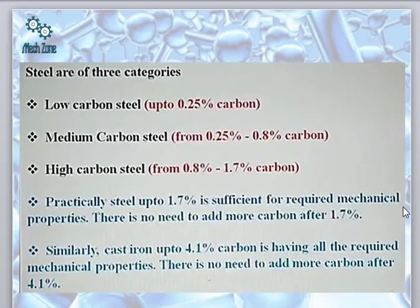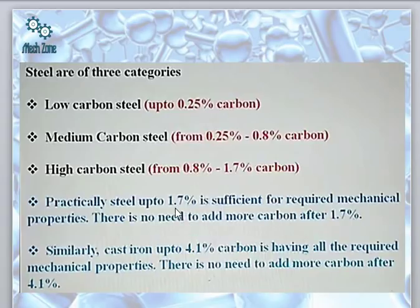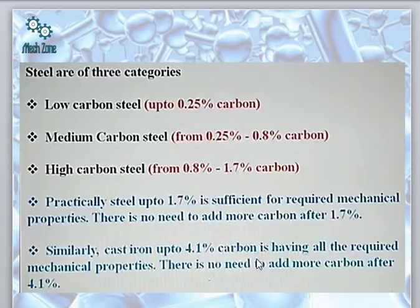Based on the percentage of carbon, steels can also be classified as low carbon steel, medium carbon steel, and high carbon steel. Low carbon steel has carbon up to 0.25 percent; medium carbon steel has carbon from 0.25 to 0.8 percent; and high carbon steel has carbon above 0.8 percent up to 1.7 percent. Practically, steel up to 1.7 percent carbon has sufficient mechanical properties, and there is no need to add carbon beyond 1.7 percent. Similarly, for cast iron, up to 4.1 percent carbon provides the required mechanical properties.